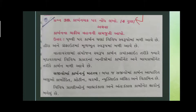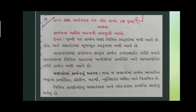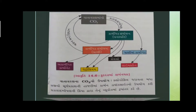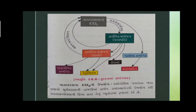Now, the next question is about the carbon cycle: write a note on the carbon cycle, or explain the carbon cycle. Carbon is found on Earth in many different forms — for example, as CO3²⁻ (carbonate), and in other forms.